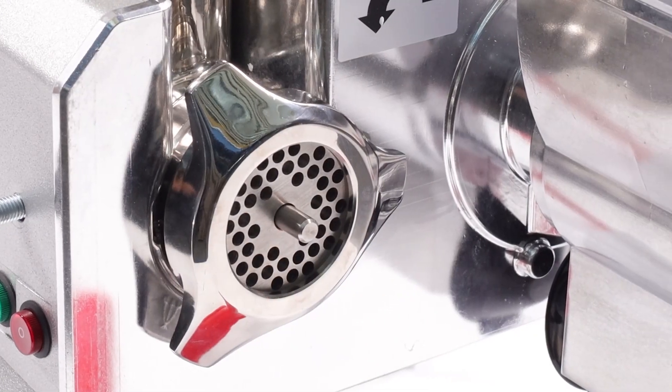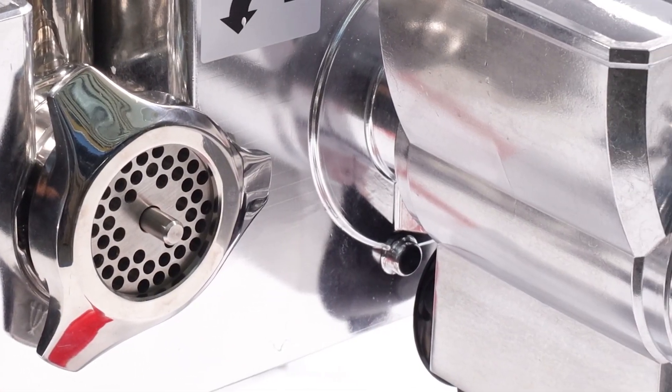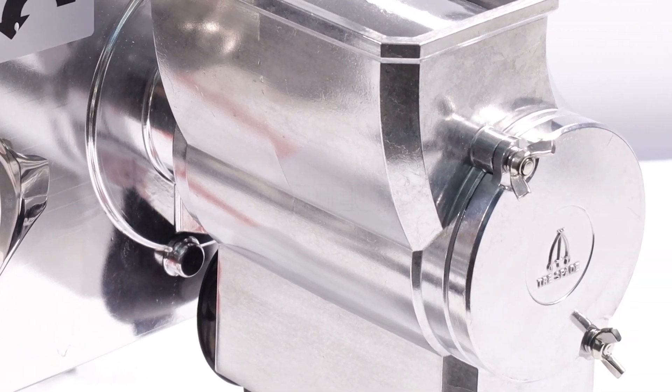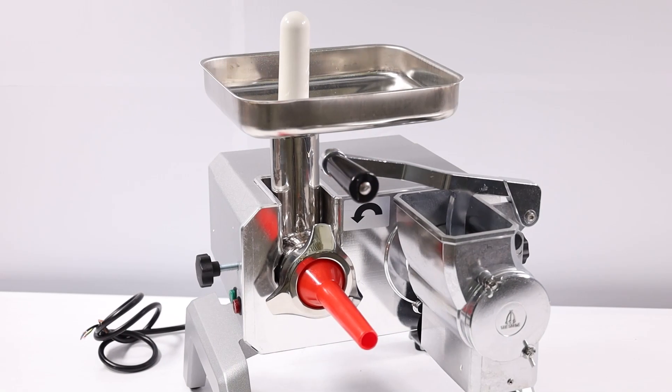Das kompakte Gehäuse hat ein Gewicht von 19 kg und seine Abmessungen von 39 x 40 x 34 cm machen die Maschine handlich und leicht in engen Räumen positionierbar.